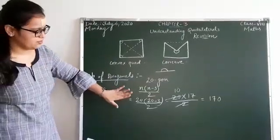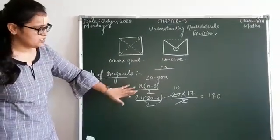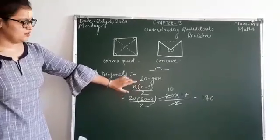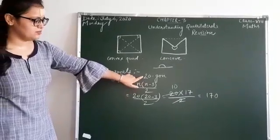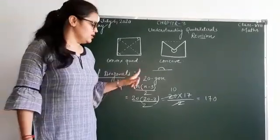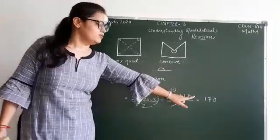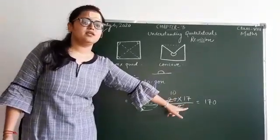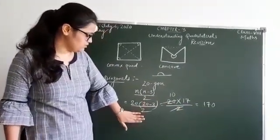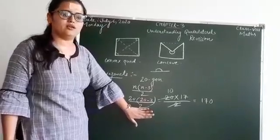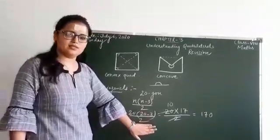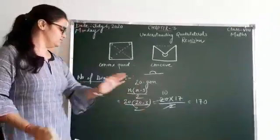10 multiplied by 17 equals 170. So there can be 170 diagonals in a 20-gon — a polygon having 20 sides. Applying this very simple formula, you can find out the number of diagonals in any polygon.